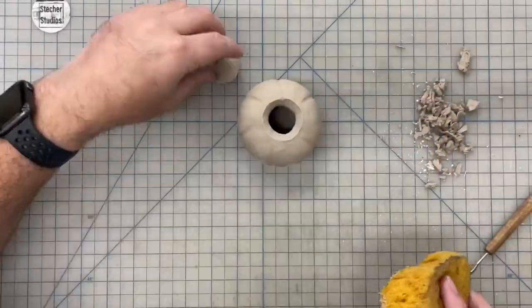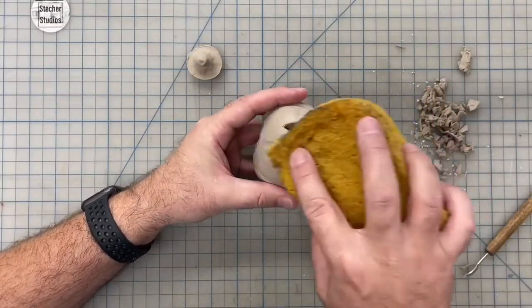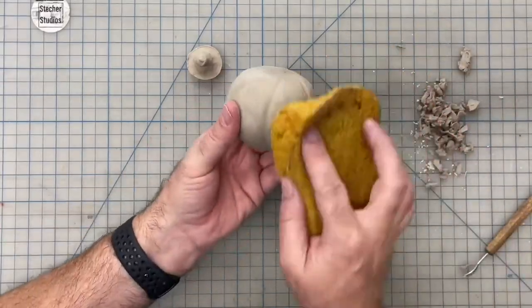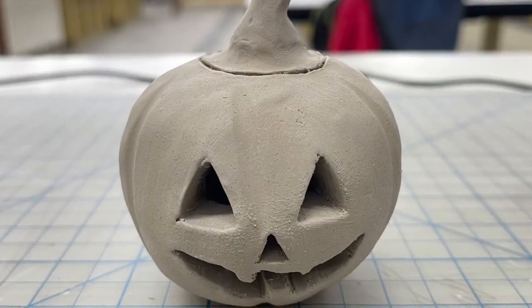Lastly, I'm going to go over my work and smooth everything out with a sponge to clean up any of the crumbs that were left over and any of the rough edges from cutting and trimming. A little extra patience and a little extra work makes our pumpkin turn out nice and smooth and clean.